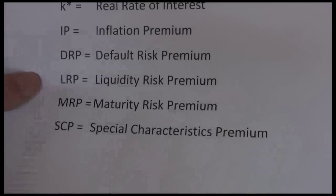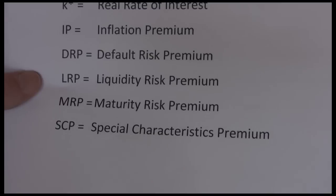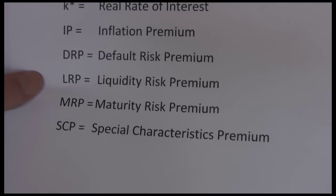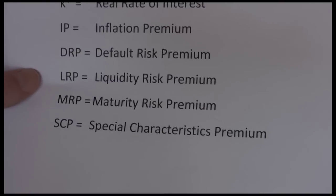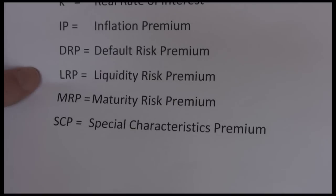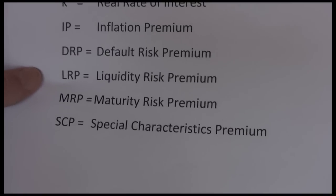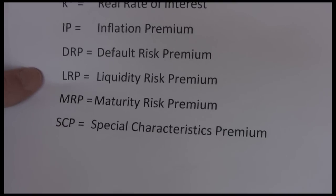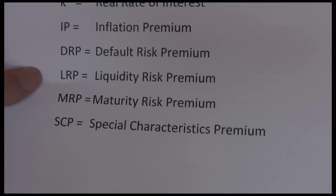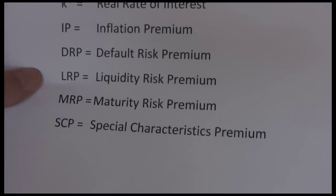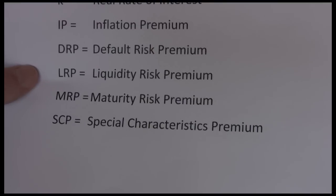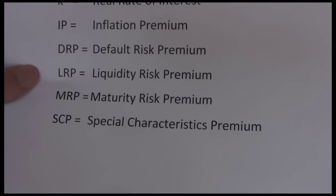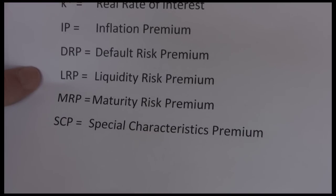Lastly, we have the special characteristics premium, which is a catch-all category. One example is a call provision, which gives the issuer the right to buy back the bond prior to maturity — the bond holder has no choice. Call provisions favor the issuer and disadvantage the bond holder, so if a bond has a call provision, the bond holder considers it more risky and wants a slightly higher rate of return. Another feature is convertible bonds, which are convertible into shares of common stock at the bond holder's discretion. This is an advantage to the bond holder, so bond holders will sometimes accept a negative special characteristics premium — accepting a lower rate of return — for convertible bonds.